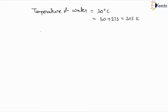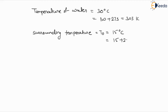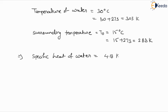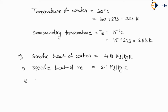The surrounding temperature, T₀, is given as 15 degree centigrade, which converts to 288 Kelvin. The specific heat of water is 4.18 kJ per kg Kelvin. The specific heat of ice is 2.1 kJ per kg Kelvin. The latent heat of ice is 333.5 kJ per kg. These are all the given terms.